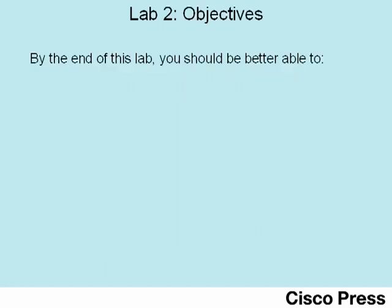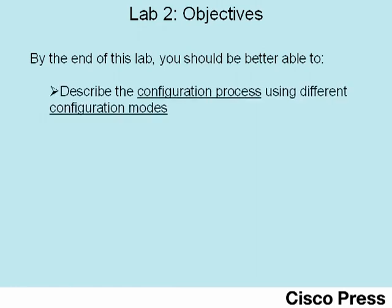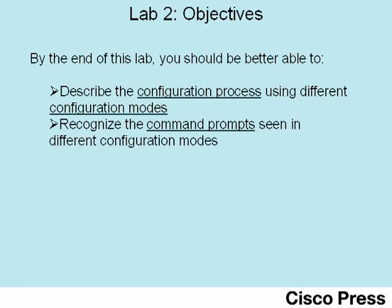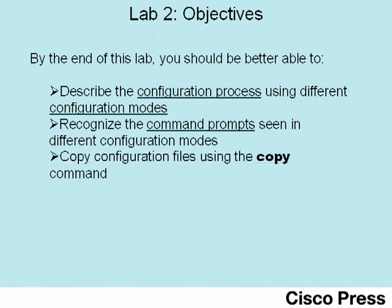This lab has three main objectives. The first two relate to the configuration process. By the time you're done with this lab, you should be able to describe the configuration process and how configuration mode uses several configuration sub-modes. You'll also be able to recognize several of the different configuration sub-modes based on the command prompts that identify those modes. The third objective relates to the copy command — how to use it to copy different configuration files inside a router and how to see the contents of those configuration files.